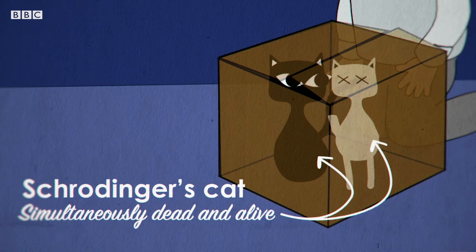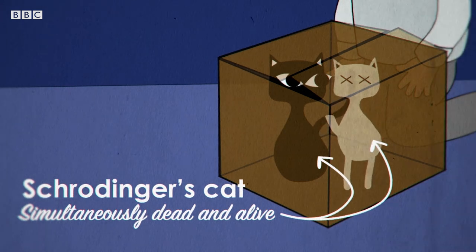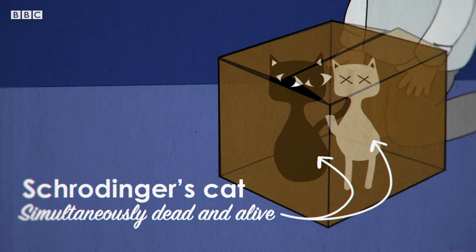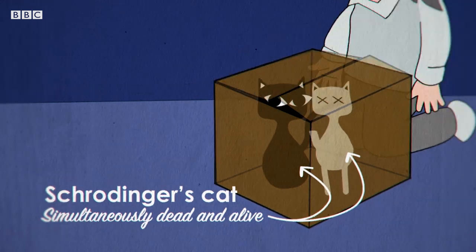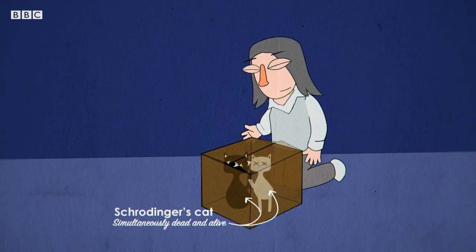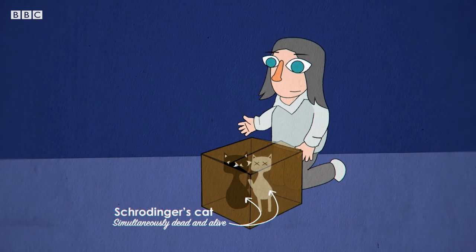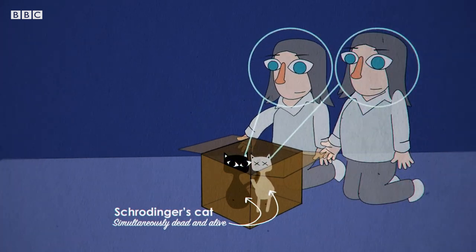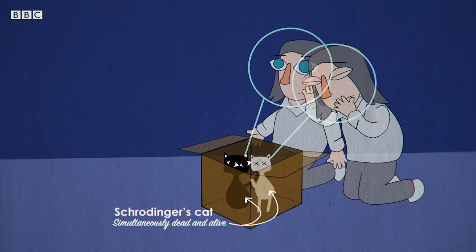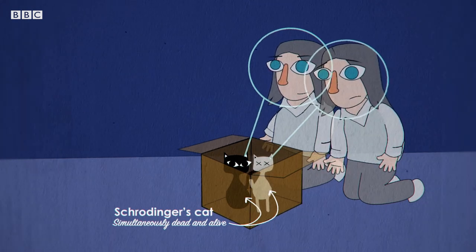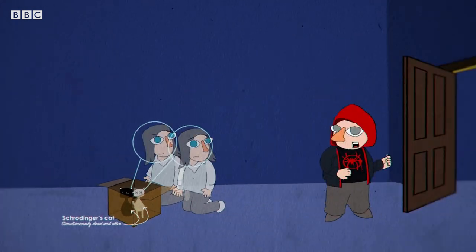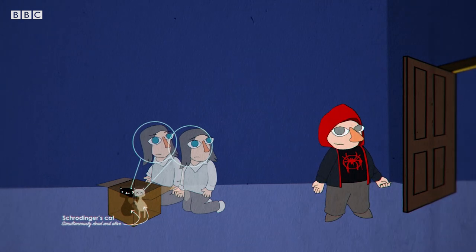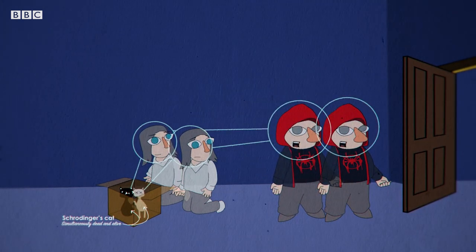You look in the box to look at the cat — you get entangled with the cat by doing that. So before you open the box, there are two cats but only one of you. And then when you open the box, now there are two of you, because you got entangled with the cat and then you split. The pilot wave explains that you don't need any of this multiverse stuff — just go with the pilot wave, it's fine.